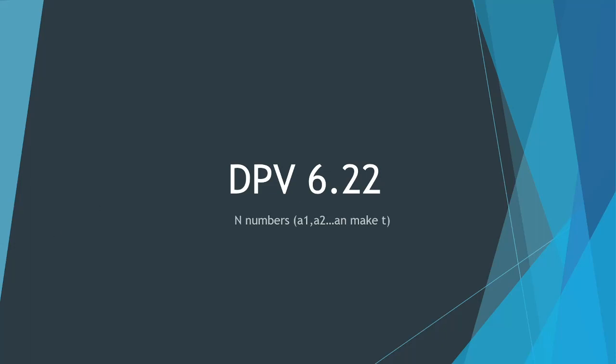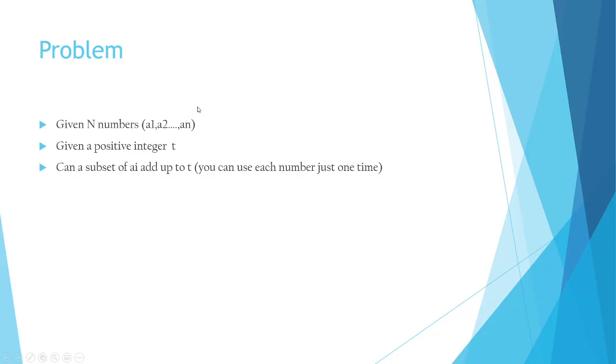Welcome back guys to another session on dynamic programming. Today we are talking about problem 6.22, which is n numbers a1 to an, and we try to make a target value of t. The problem is very similar to the backpack problem and you can only use each number just one time, which is one variant of the backpack problem.